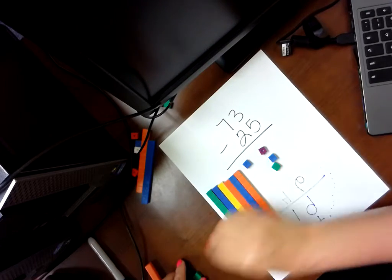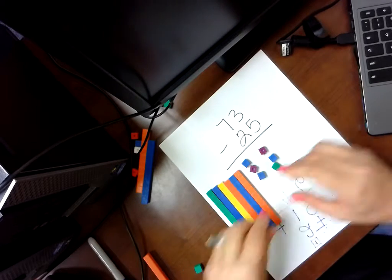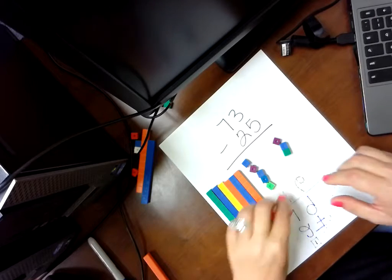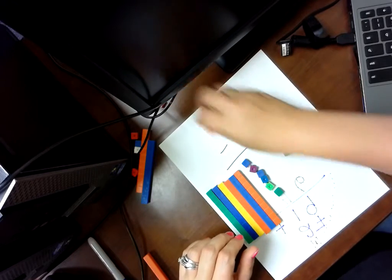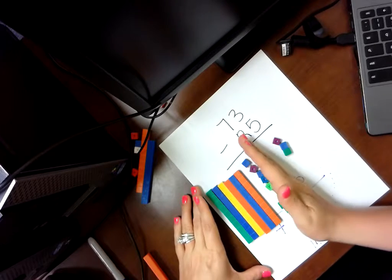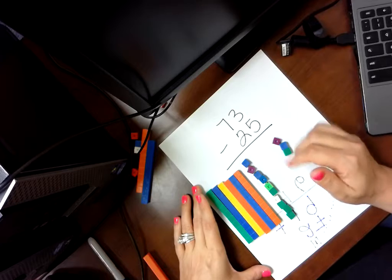And one of these is a 10. So, 1, 2, 3, 4. Let's keep these separate. 5, 6, 7, 8, 9, 10. Now, I've got 10, and I can take 5.